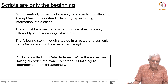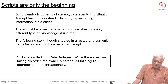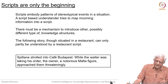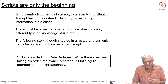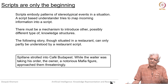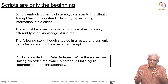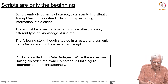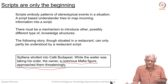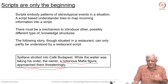There must be a mechanism to introduce other, possibly different types of knowledge structures, because scripts are just patterns of stereotypical activity. You have to reason with other things in real-life situations. The following story, even though situated in a restaurant, can only be partially understood by the restaurant script. Spillane's story: he strolled into Cafe Budapest, and while the waiter was taking his order, the owner — a notorious mafia figure — approached them threateningly. Clearly, something more than routine is happening here. We need something else to understand these stories, and we will look at the notion of goals and plans after we are done with scripts.